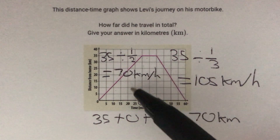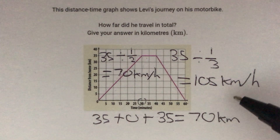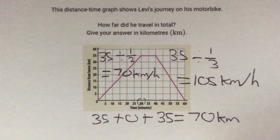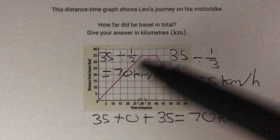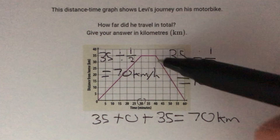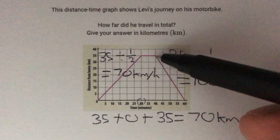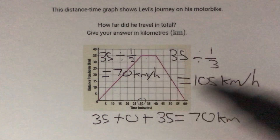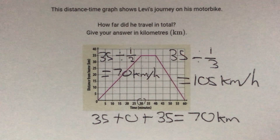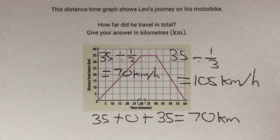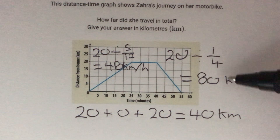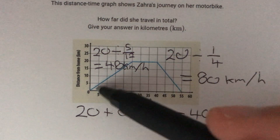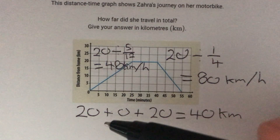So Levi travels away at 70 kilometers per hour and travels back at 105 kilometers per hour. This makes sense just by looking at the graph, because the return segment of the line is steeper than the outward segment, and a steeper line on a distance-time graph means a faster speed. Looking back at the first example, we can also see the far steeper line where we're going 80 kilometers per hour compared to the less steep section where we're going only 48 kilometers per hour.